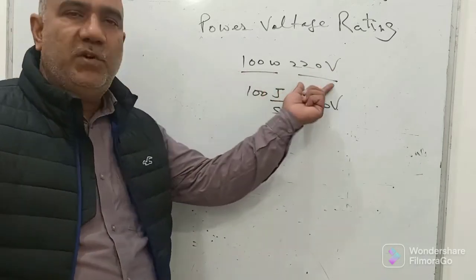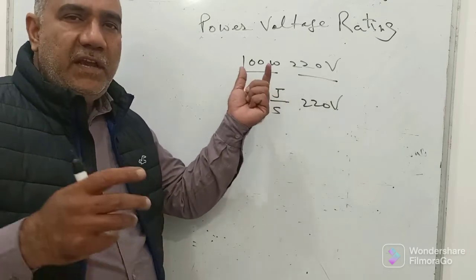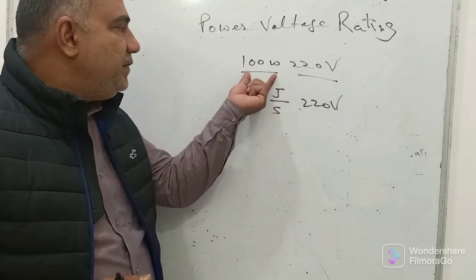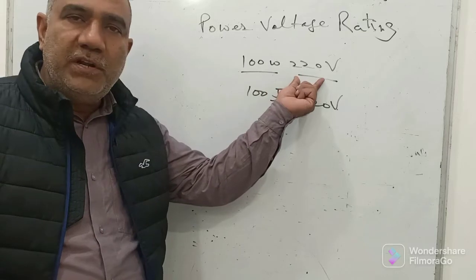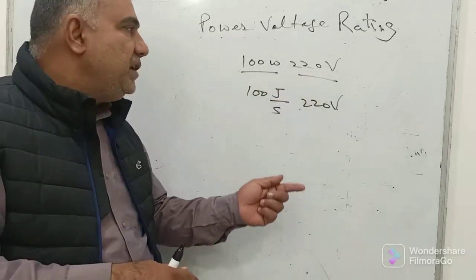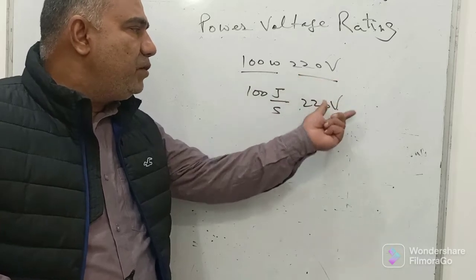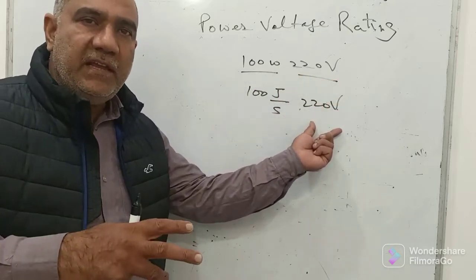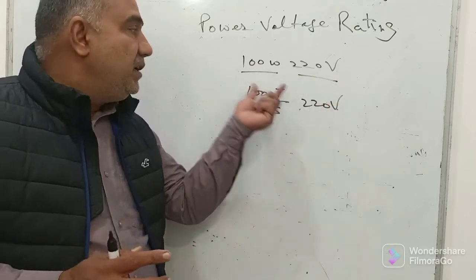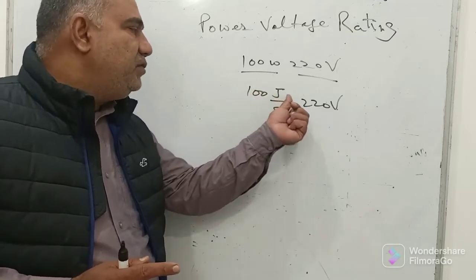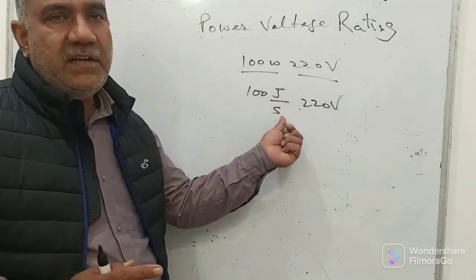Let's see. Suppose an electrical bulb is written like this: 100 watt and 220 volt. This means only this: if you operate this bulb at 220 volt of input, that is you supply 220 volt across this bulb, this bulb will consume 100 joule of energy in one second.